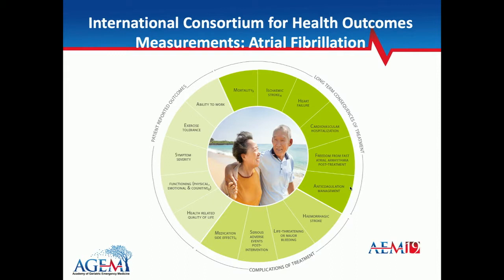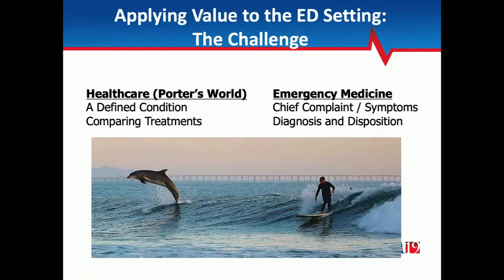Here's the challenge: Michael Porter's equation works great for prostate cancer in a 60-year-old, but the ED doesn't really do prostate cancer for 60-year-olds — we do chief complaints. Our value is actually figuring out the diagnosis — diagnosing a pulmonary embolism, or initiating care for someone with a fall and hip fracture. It doesn't fit perfectly. Emergency medicine is just different — it's a defined condition world comparing radiation versus surgery, whereas our world is diagnosing it, figuring out the actual problem, and making a disposition.